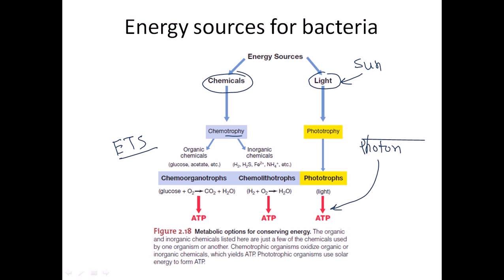If bacteria use organic chemicals to derive energy they can be termed as chemo-organotrophs because they are using organic source. But if they are using inorganic chemicals they will be termed as chemolithotrophs.